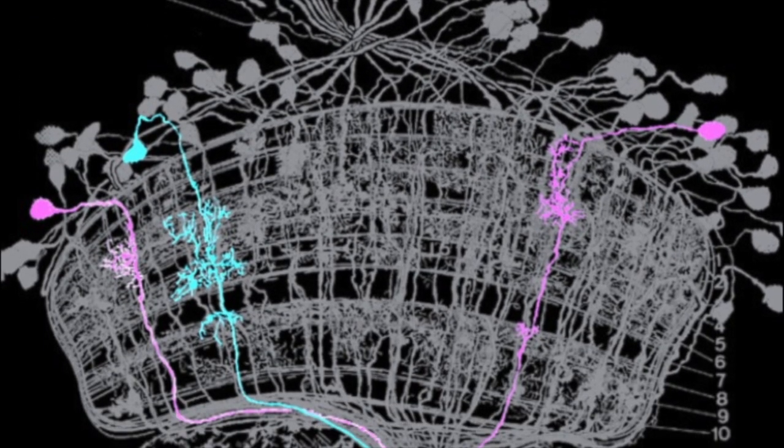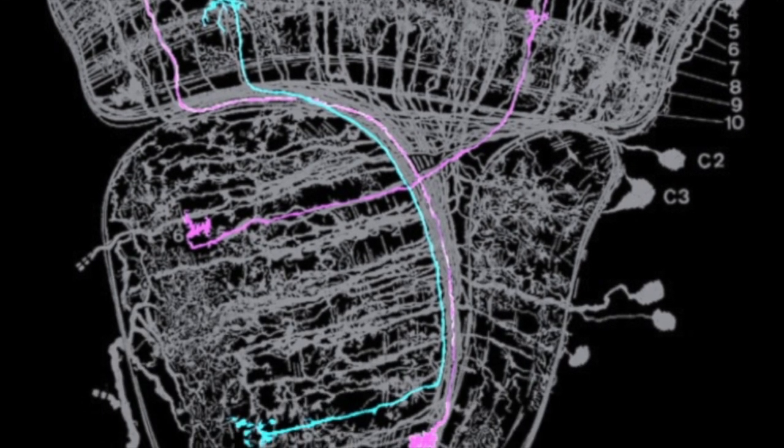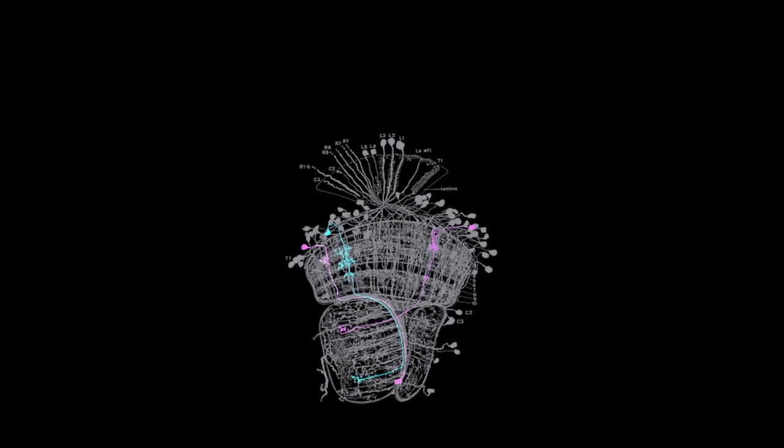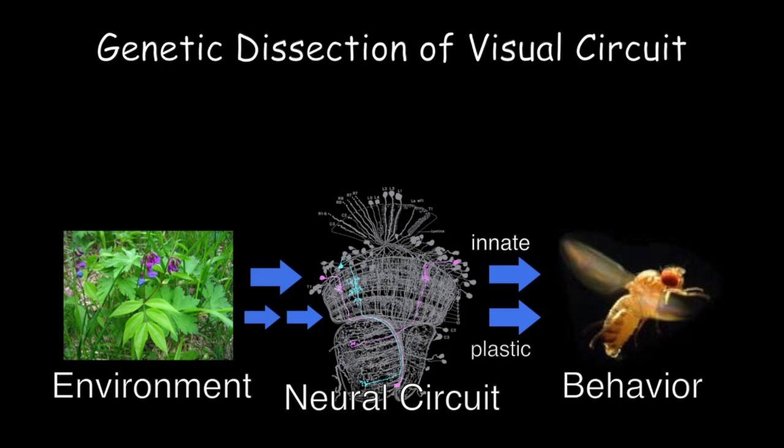The fly visual system contains over a hundred thousand neurons and mediates a wide range of behaviors, both innate and learned.